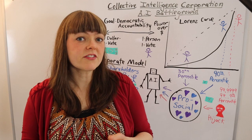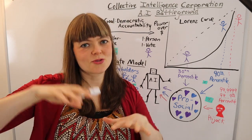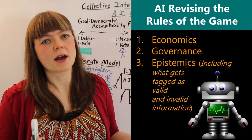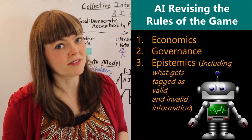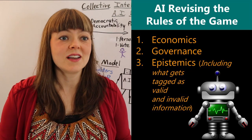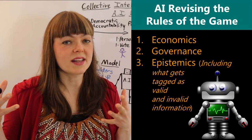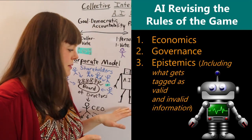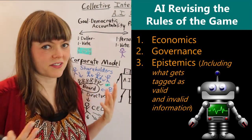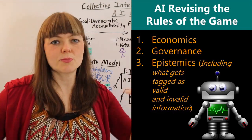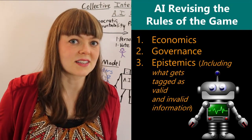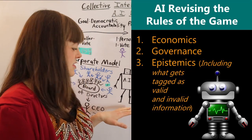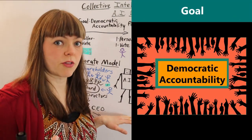If artificial intelligence has the potential to transform the rules of the game — in terms of how economics is structured, how governance is structured, how we decide what is valid and invalid information — if that's about to change because artificial intelligence is going to supercharge those processes, then it matters a lot whether there's democratic accountability for the robots.